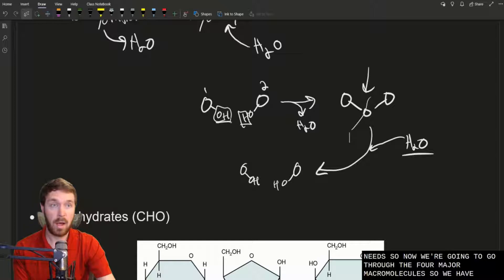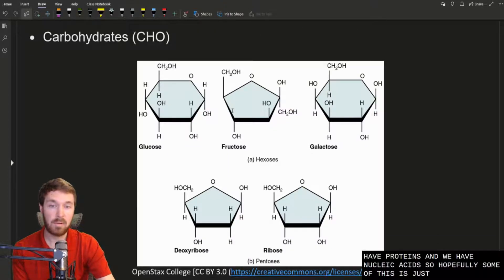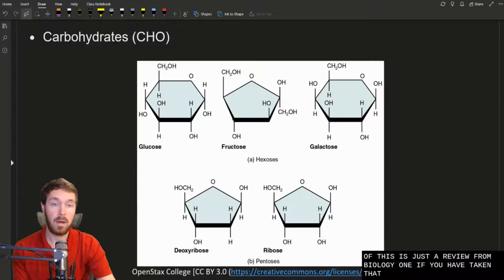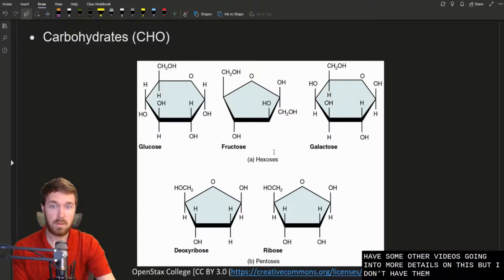Now we're going to go through the four major macromolecules. So we have carbohydrates, we have lipids, we have proteins, and we have nucleic acids. Hopefully, some of this is just a review from Biology 1.